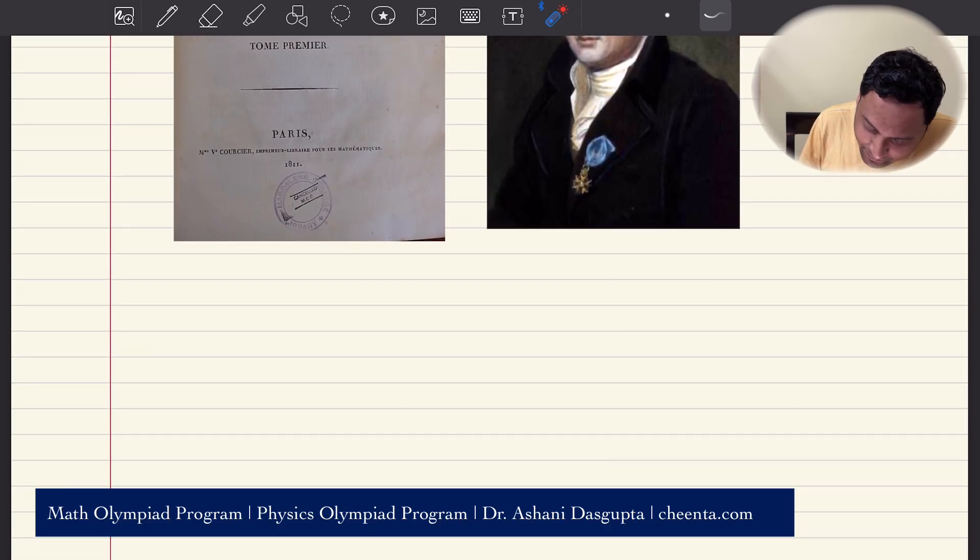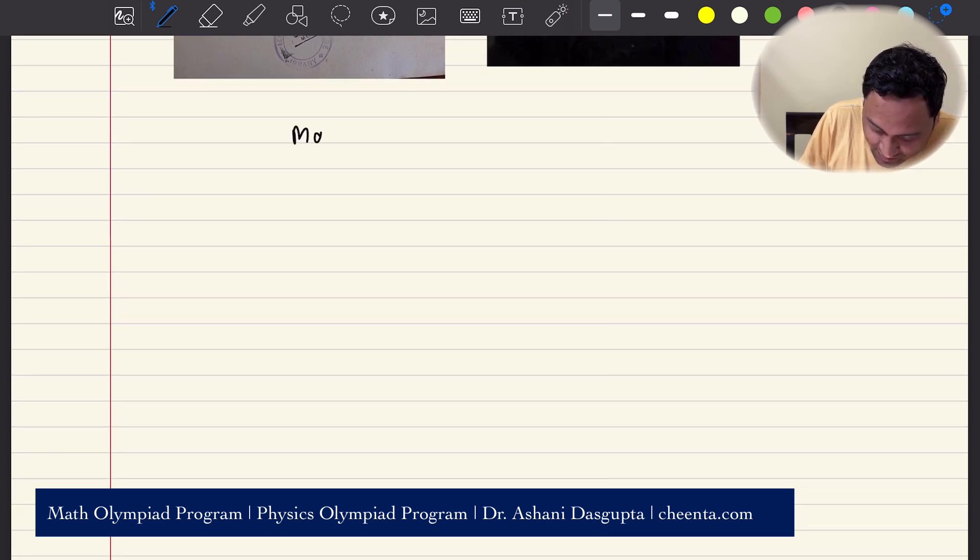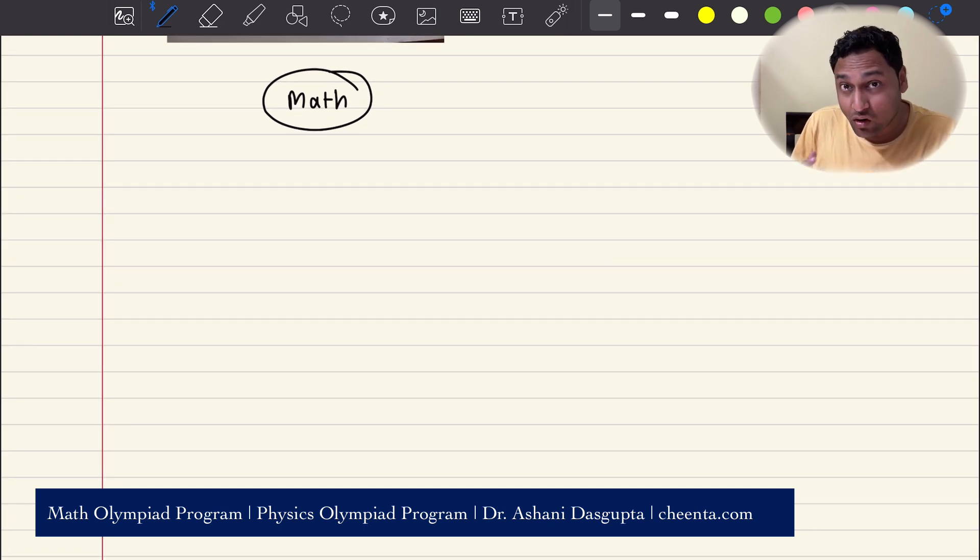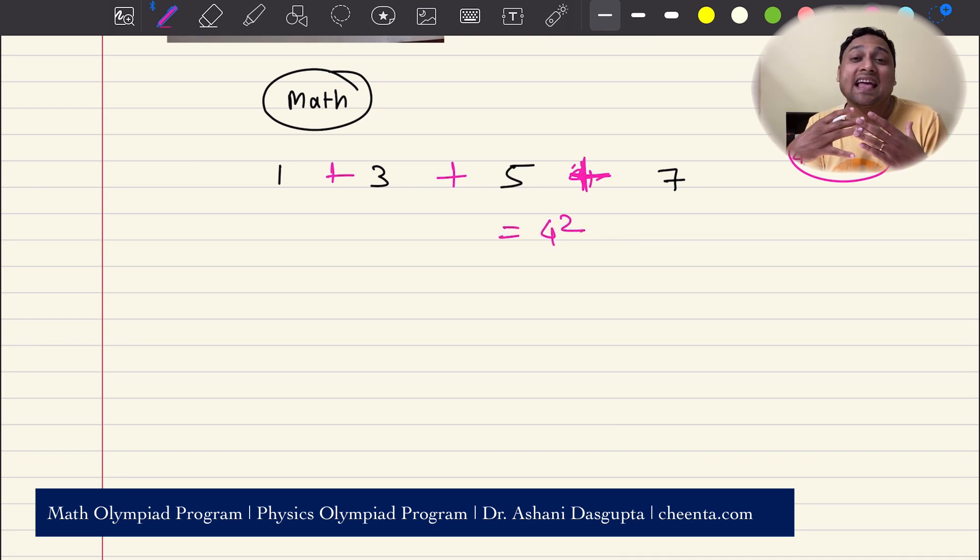Let's talk about the math first. We have a very beautiful formula for the sum of first n odd numbers. If you have 1, 3, 5, 7, if you add the first 4 odd numbers, the sum will be 4 square, which is 16. If you add the first 10 odd numbers, the sum will be 10 square, 100. This is a very well-known formula from mathematics.